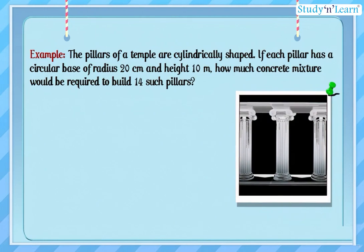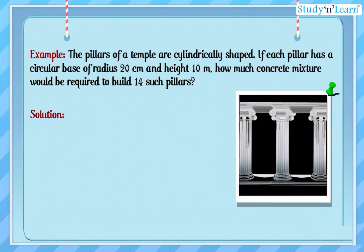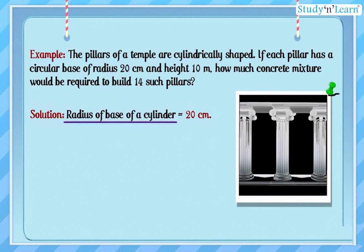Let us take an example. The pillars of a temple are cylindrically shaped. If each pillar has a circular base of radius 20 centimeters and height 10 meters, how much concrete mixture would be required to build 14 such pillars? The concrete mixture used to build the pillars is going to occupy the entire space of the pillar, so we need to find the volume of the cylinders.